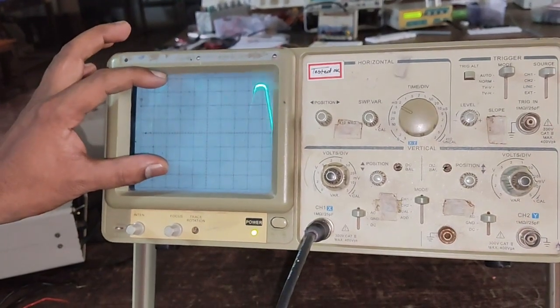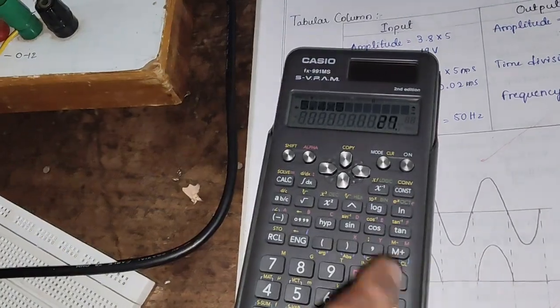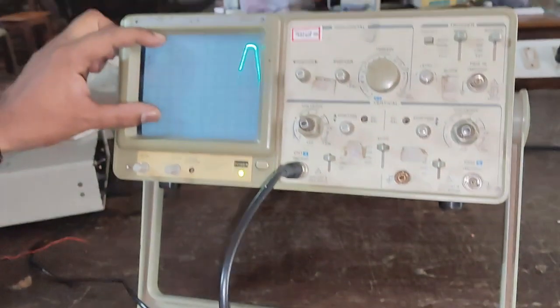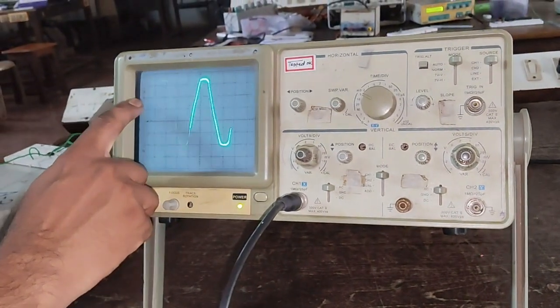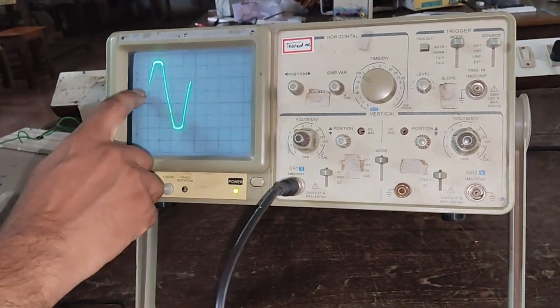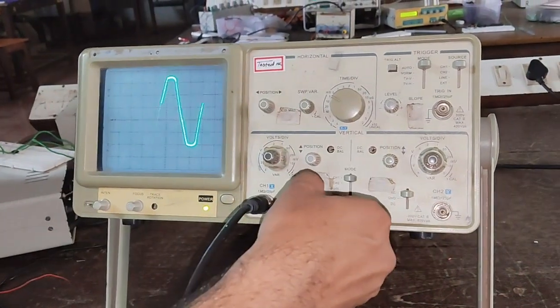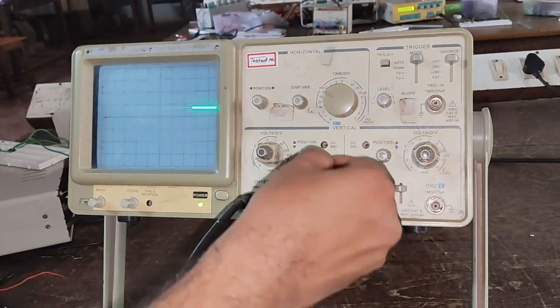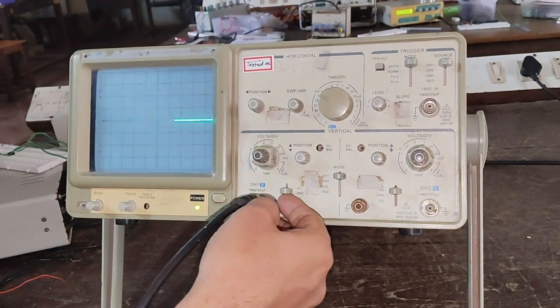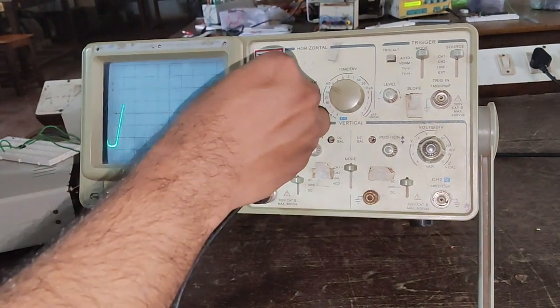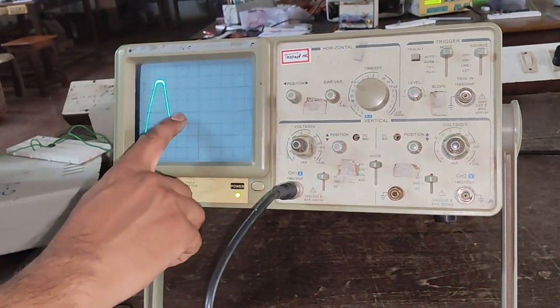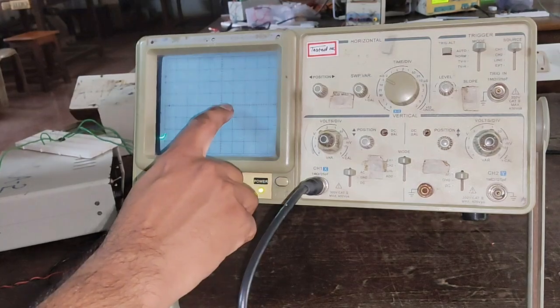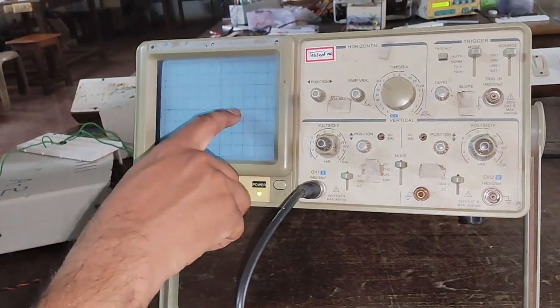That will be 5.4 into 5, which is 27 volts peak to peak. Now we will measure the frequency. There's one positive and one negative. We will set this to ground to set the reference value, and turn it to AC. Using X position, adjust it properly. Now we will measure its width. Here from 0, 1, 2, 3 and 3.5.